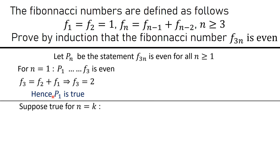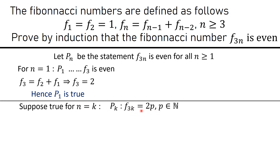We now suppose that the statement P(k) is true, meaning it holds for n = k. So P(k) states that f(3k) is divisible by 2, meaning f(3k) is even. This is our induction hypothesis.